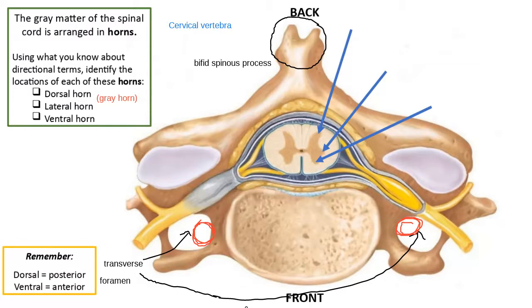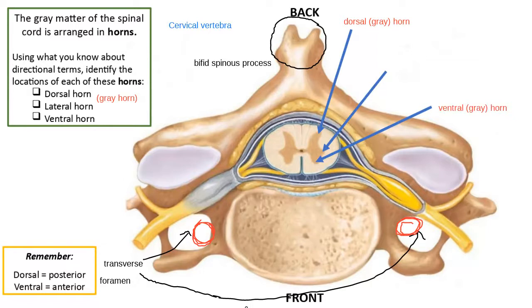This is the dorsal gray horn — the one closest to the back side of the spinal cord. The one closest to the front side is called the ventral horn or ventral gray horn. The one on the outside, farthest from the middle, is called the lateral horn. When looking at the three horns of the spinal cord, the types of neurons that live in each place are actually different.